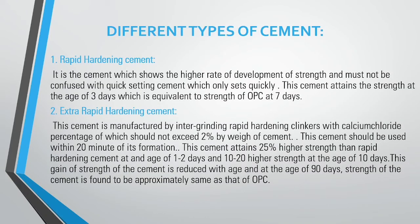Types of Cement. Rapid Hardening Cement: This cement shows a higher rate of development of strength and must not be confused with quick-setting cement, which only sets quickly. This cement achieves the strength at 3 days equivalent to the strength of OPC at 7 days. Extra Rapid Hardening Cement: This cement is manufactured by intergrinding rapid hardening cement with calcium chloride. It should be used within 20 minutes of its formation. It attains 25% higher strength than rapid hardening cement at 1–2 days, and 10–20% higher strength at the age of 10 days. This gain of strength is reduced at the age of 90 days.